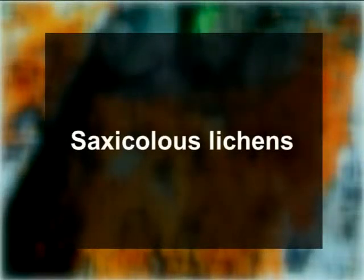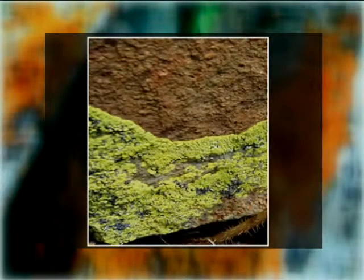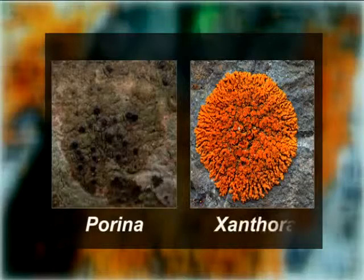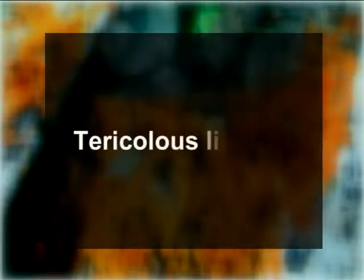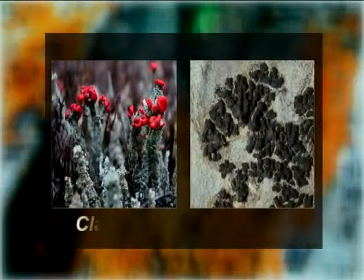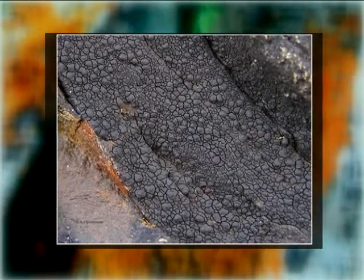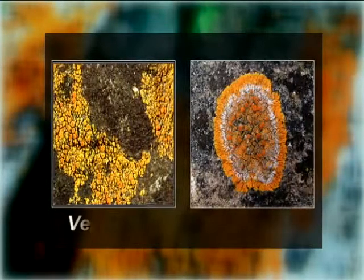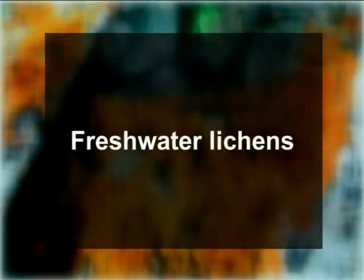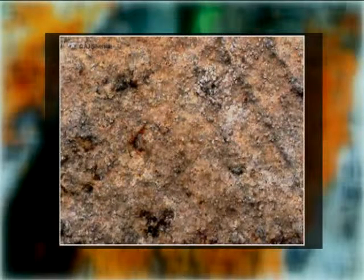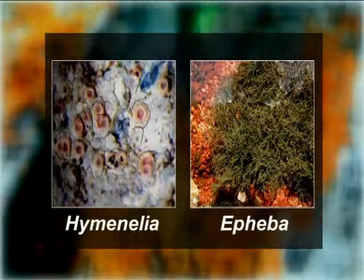Third, Saxicolous lichens: these develop on rocky substrata — for example, species of Porina and Xanthoria. Fourth, Terricolous lichens: these grow on the ground — for example, species of Cladonia and Collema. Fifth, Marine lichens: these develop on siliceous rocky shores of the sea — for example, species of Verrucaria and Caloplaca. Sixth, Freshwater lichens: these develop on hard siliceous rocks in freshwater — for example, species of Hymenelia and Ephebe.